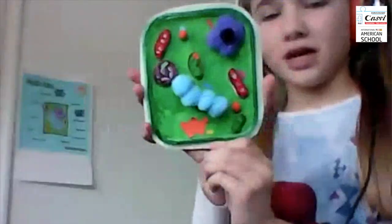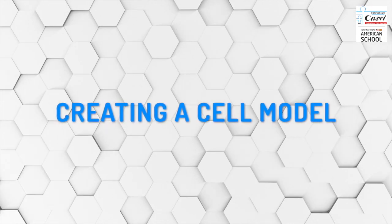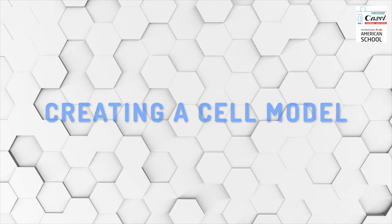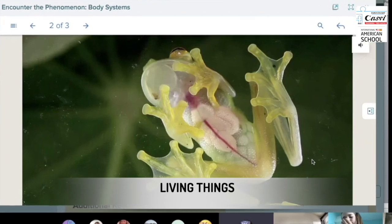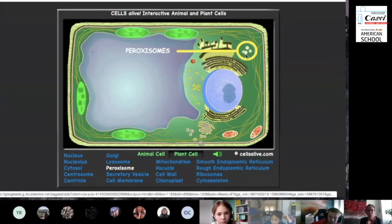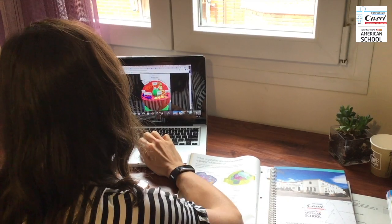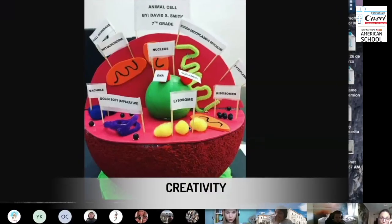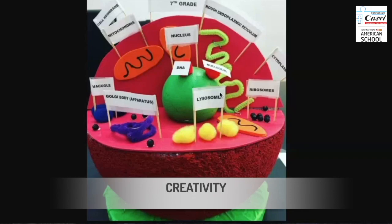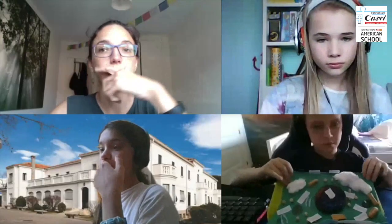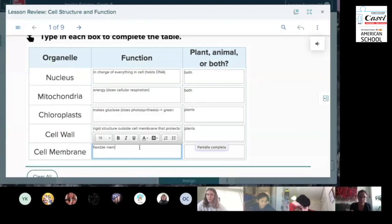Okay, this is my cell plant. After studying the characteristics of living things and cell theory, we explored the specific parts of cells and the cell organelles. So to finish, as a final project, the students made their own cell models with whatever materials they had at home, and they could choose between a plant or an animal cell.